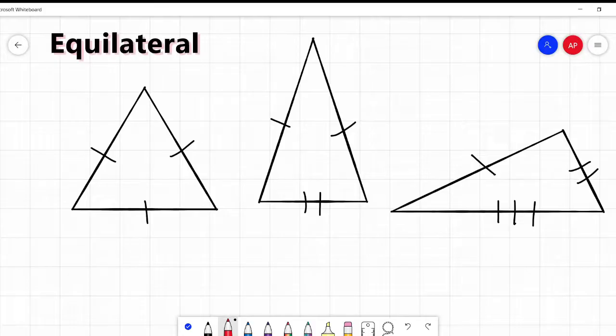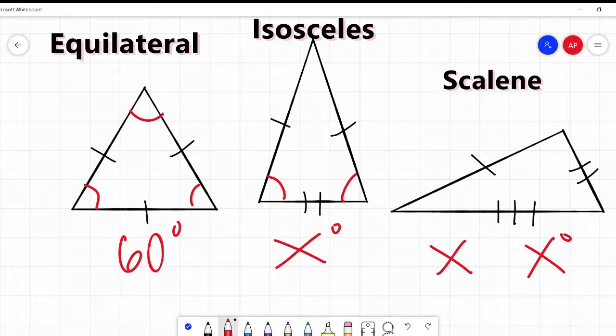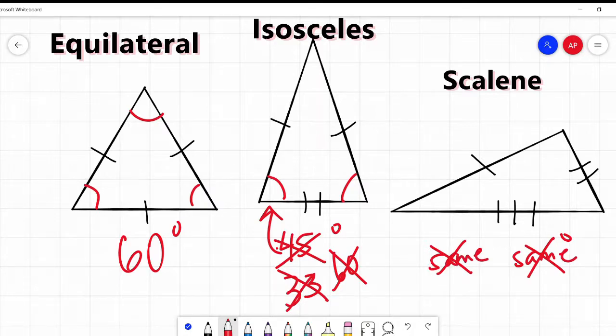Again, just as a quick recap: equilateral, equal, and all three angles are the same. Each angle is going to be 60 degrees. Isosceles, two sides are the same. These two angles are the same. There is no universal degree for those angles. You can have very tall and narrow isosceles triangle or very short and wide isosceles triangle. And scalene, none of the sides are the same and none of the angles are the same. None of the angles are the same and none of the sides are the same.